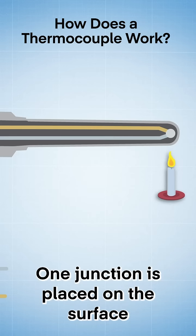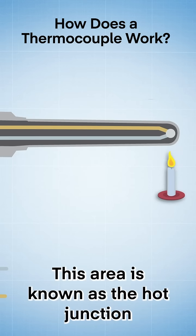One junction is placed on the surface or in the environment that is being measured. This area is known as the hot junction.